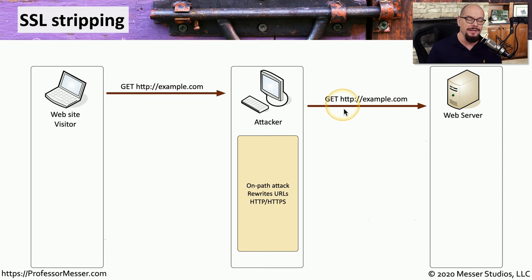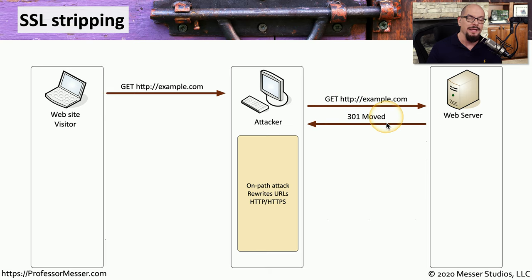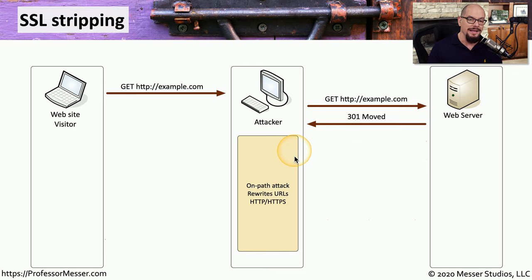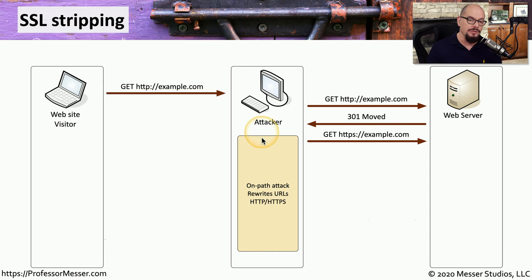The web server notices the client is asking for the non-encrypted version of the page but wants all pages sent as encrypted, so it sends a message back saying to communicate via HTTPS instead of HTTP. The attacker doesn't want HTTPS communication to occur, so it intercepts that redirect and sends the HTTPS version of the request to the web server itself. This sets up an encrypted channel between the attacker and the web server, but not between the attacker and the website visitor.